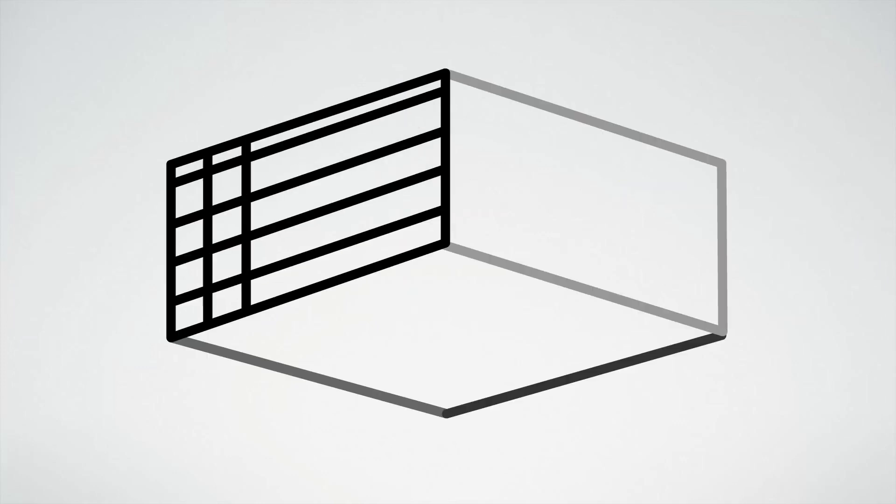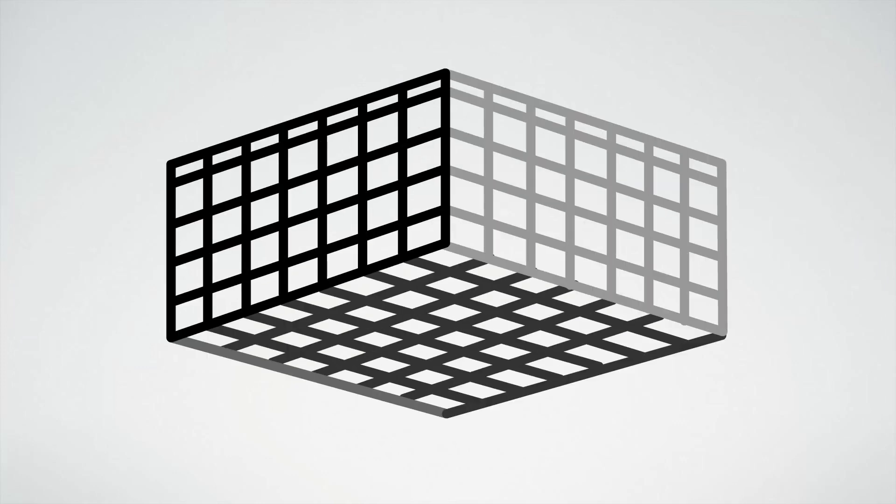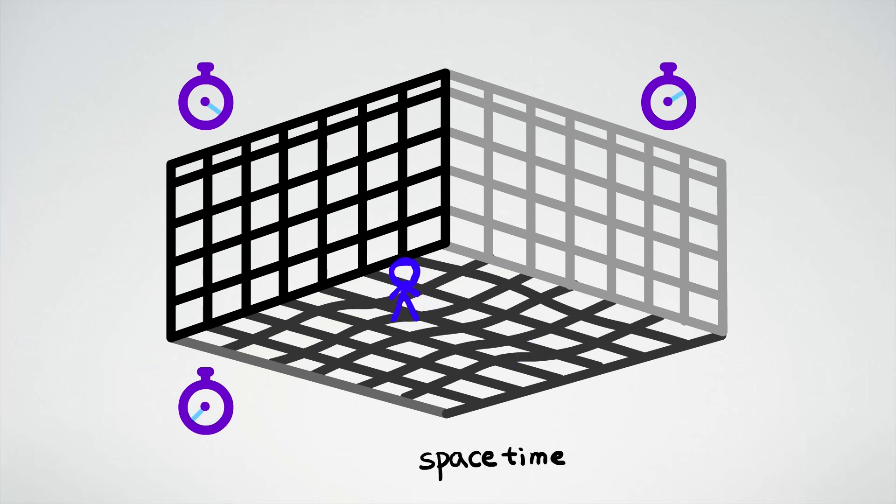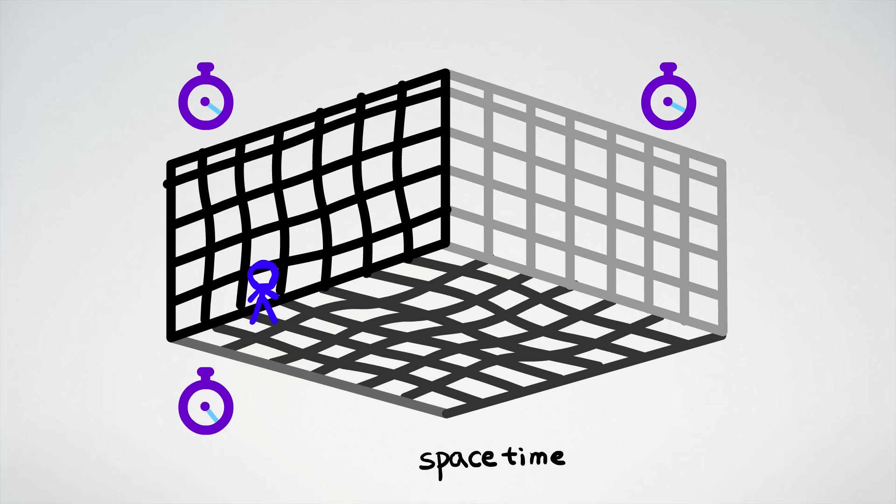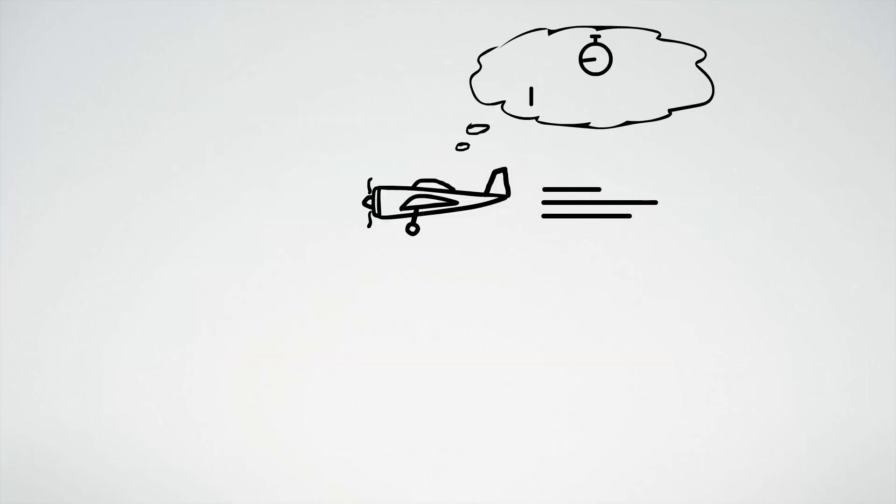For a long time, people believed space is evenly distributed and time ticks the same for everyone everywhere. However, Lorentz transformation tells us space and time are related and behave differently for observers moving at different speeds and at different locations. As the speed of objects increases, length will contract and time will slow down, which is the typical physical phenomenon of special relativity.